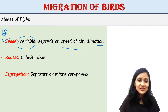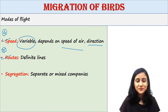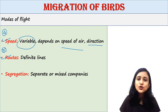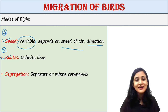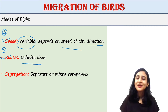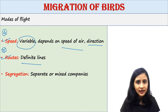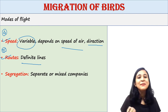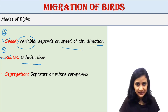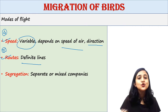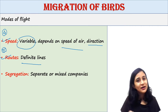Next are routes of migration. Migratory birds usually follow definite lines of flight. The route followed by them may be the same while going and returning, or may be different — it depends on the species whether the to-and-fro direction is the same or different.